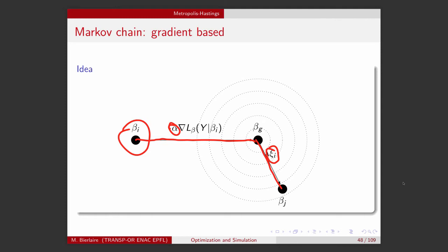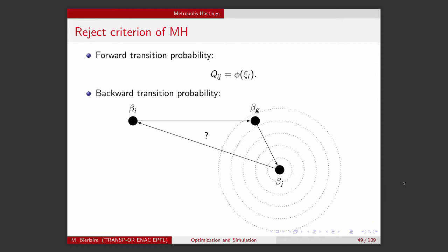So therefore, basically, the transition probability from i to j will be the same as before. It will depend on the distribution of xi_i. So that's what I have written here.